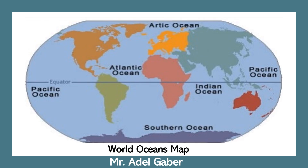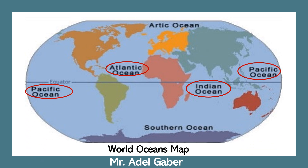Look at this map. This is the World Oceans map. Can you tell me what are the oceans on the map? Yes, the Indian Ocean, the Atlantic Ocean, the Pacific Ocean, the Arctic Ocean, and the Southern Ocean. How many oceans are there in the world? Yes, there are five oceans.